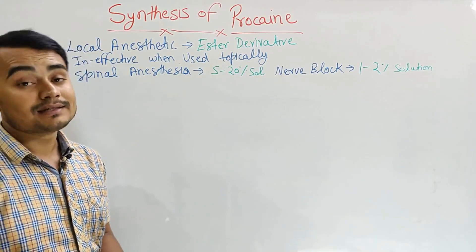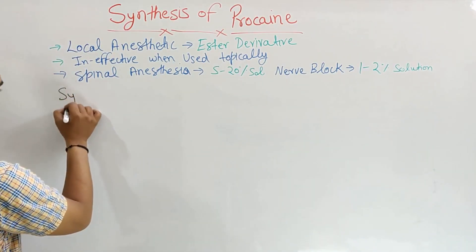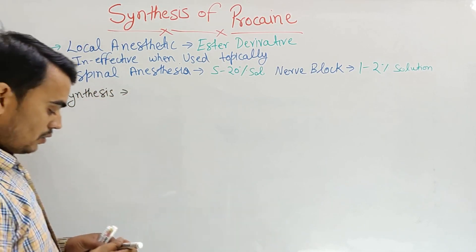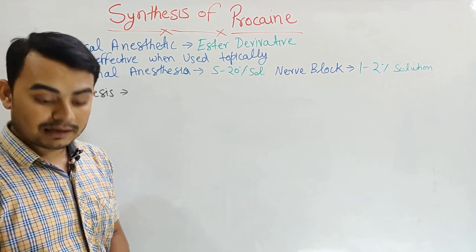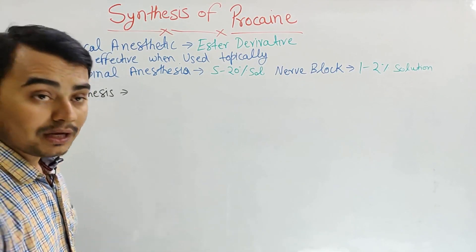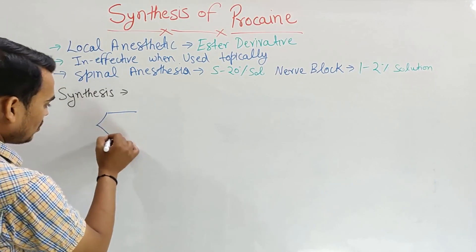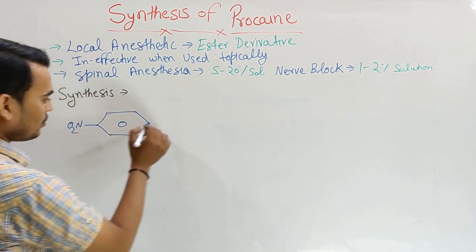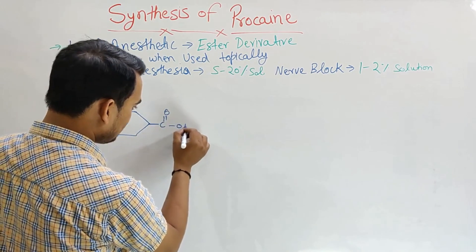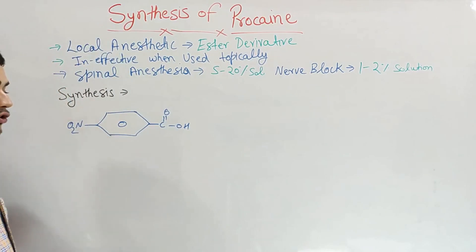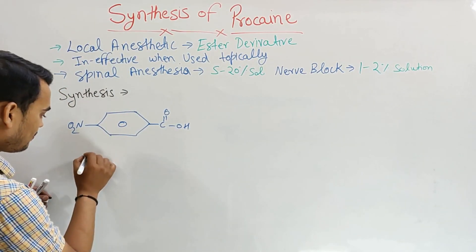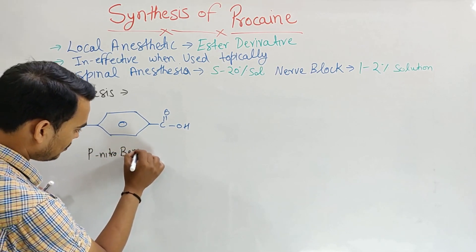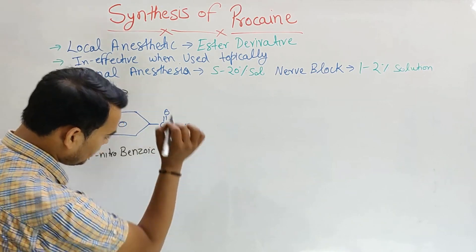Now let's discuss the synthesis of procaine. The starting material for the synthesis of procaine is para-nitrobenzoic acid.